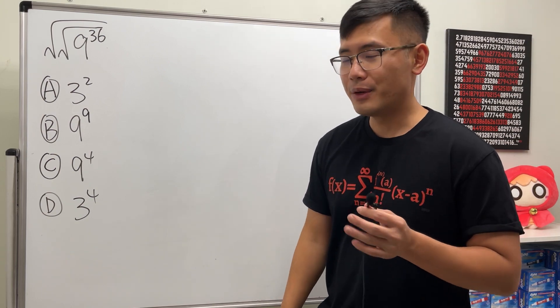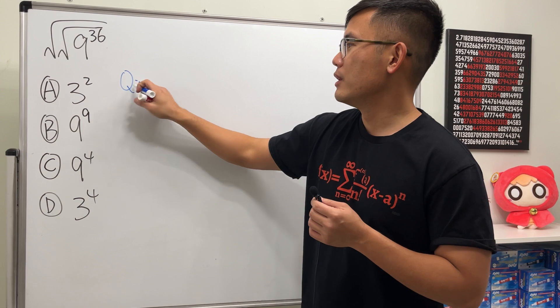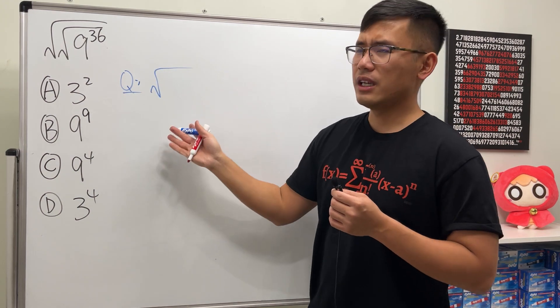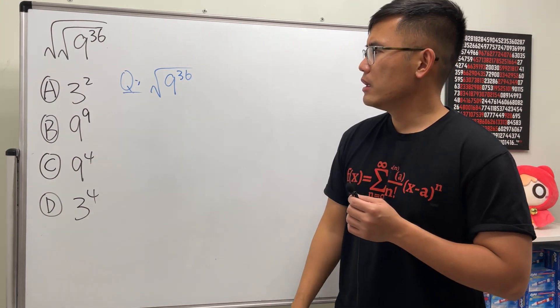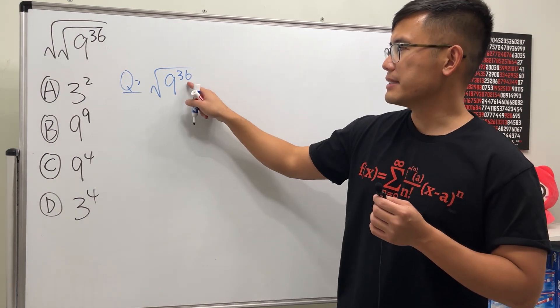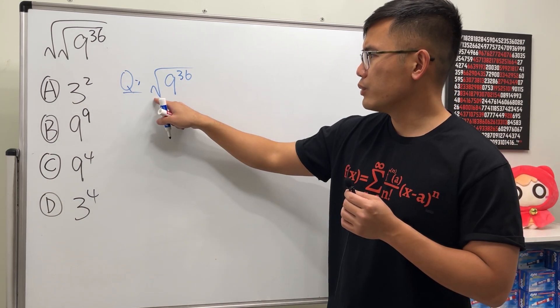Okay, before I solve this question, let me just go over the concept for you guys first. So let's take a look at square root of 9 to the 36th power. This is pretty interesting because 9 and 36 are both perfect squares.